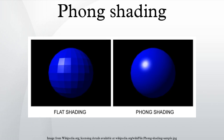See also: Blinn-Phong Shading Model — a modification of the Phong Reflection Model that trades precision for computing efficiency. Flat Shading — shading of polygons with a single color. Gouraud Shading — shading of polygons by interpolating colors computed at vertices. Phong Reflection Model — the reflection model often used with Phong shading. Specular Highlight — other specular lighting equations.